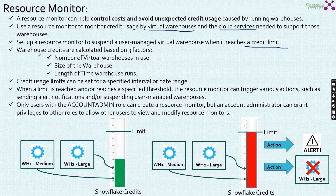The three factors are: the number of virtual warehouses in use, the size of the virtual warehouse, and the length of time the warehouse runs. Based on these three factors, warehouse credits are calculated. Credit usage limits can be set for a specific interval or for a date range.